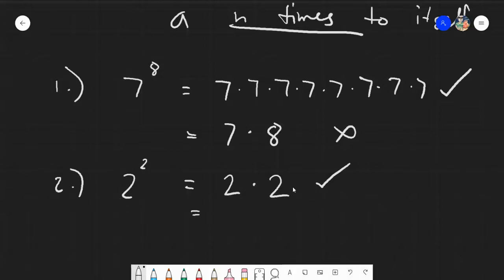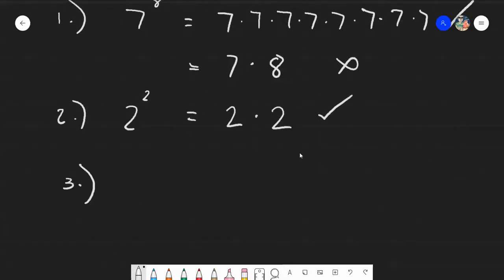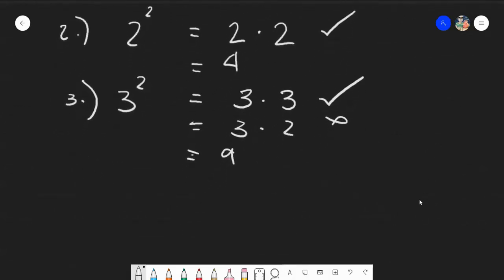Let's go on to the next example. Say we have number 3, we have 3 squared. So this one is 3 times 3, and it's never 3 times 2. And of course, it goes a long way that you know how to multiply. Because 3 times 3, the answer is simply 9. This one, the answer is 4. But 7 raised to 8 is a little bit big, so we'll not answer that anymore.